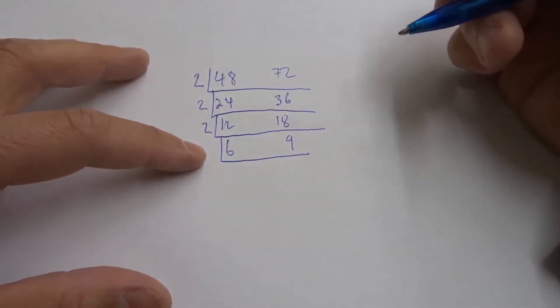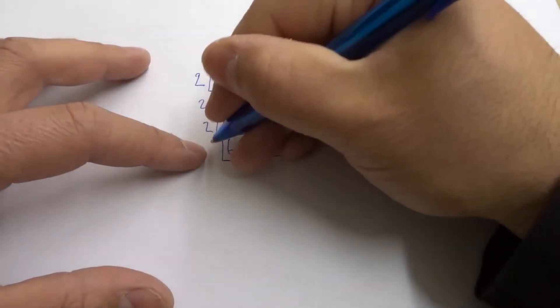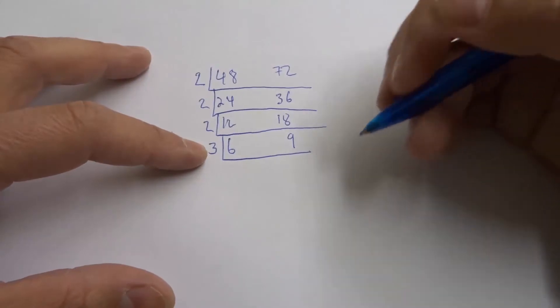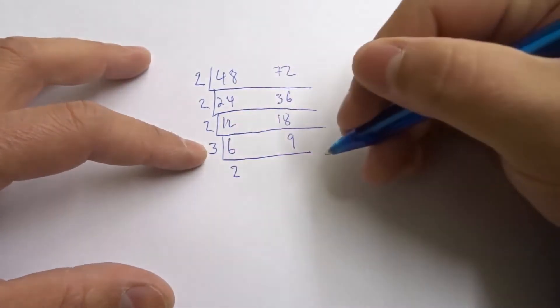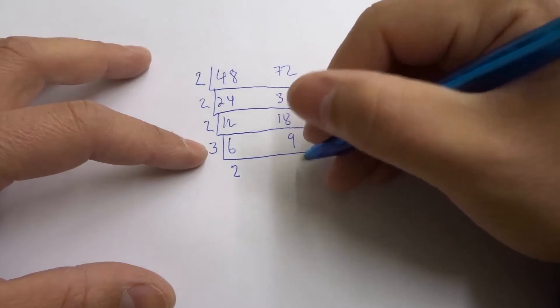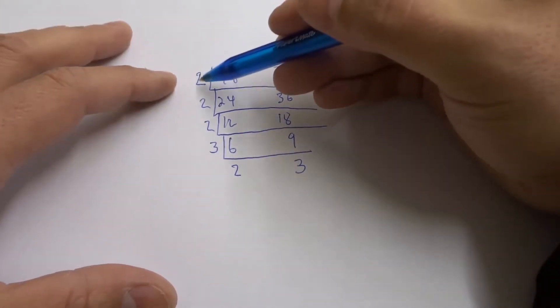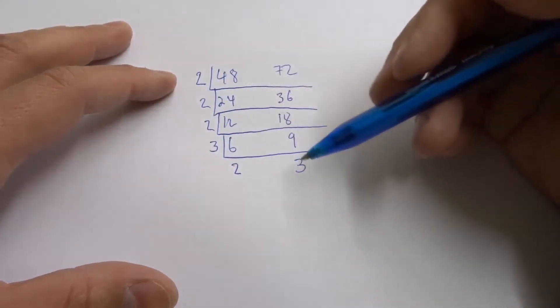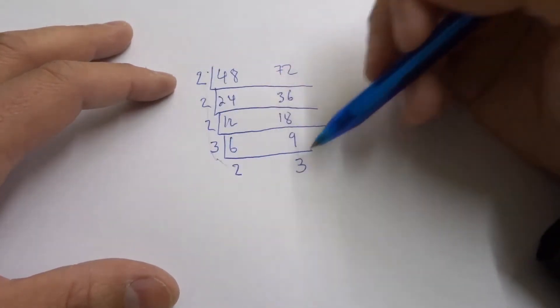And then last but not least, the smallest prime number for these would be 3. So 3 goes into both of those numbers. 6 divided by 3 is 2, and then 9 divided by 3 is 3. And we're waiting until we have all prime numbers going down this way and down this way. So right now we have all prime numbers going down this way and this way.